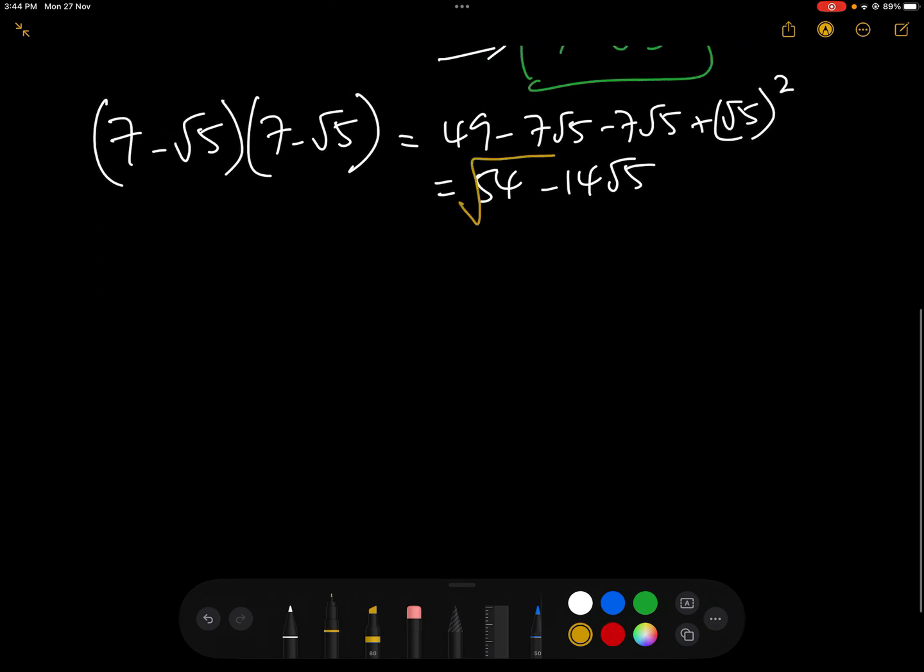So therefore, the square root of 54 minus 14 root 5 is the square root of 7 minus root 5 squared, and so therefore, the answer, a simplification of the square root of 54 minus 14 root 5 is indeed 7 minus root 5. So the trick works.